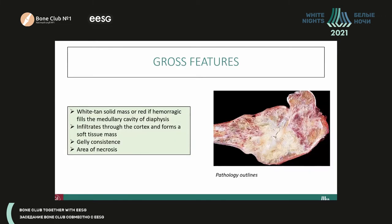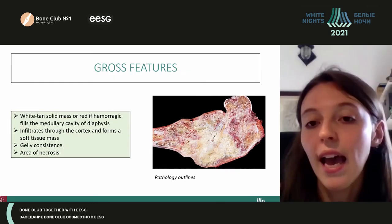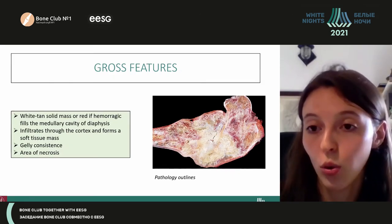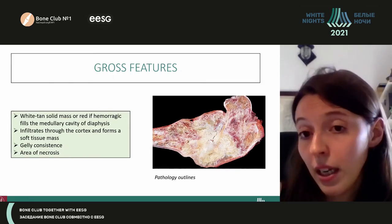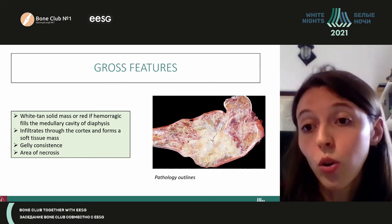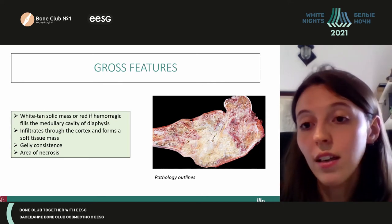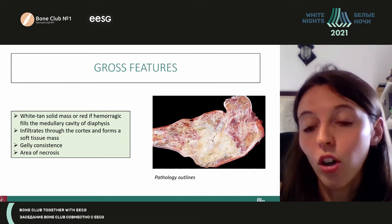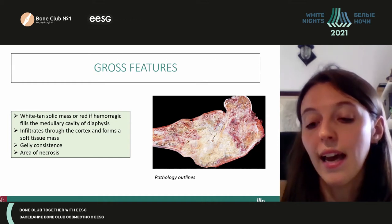Nowadays we do not receive specimens before chemotherapy anymore. What we could see was a white-grey solid mass involving the diaphysis or metaphysis of the bone, infiltrating through the cortex and going into the soft tissue. After chemotherapy, what we see is a more gelatinous consistency with a lot of necrosis and hemorrhage.